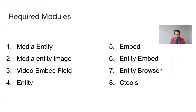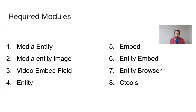Entity Module is really used as a dependency for Media Entity. Embed is a dependency for Entity Embed - it's just a framework for embedding items into the editor. Then you have Entity Browser. And C Tools is a soft dependency for Entity Browser - you can install Entity Browser without it, but if you want to create Entity Browsers, you need the C Tools module. So now it's demo time.